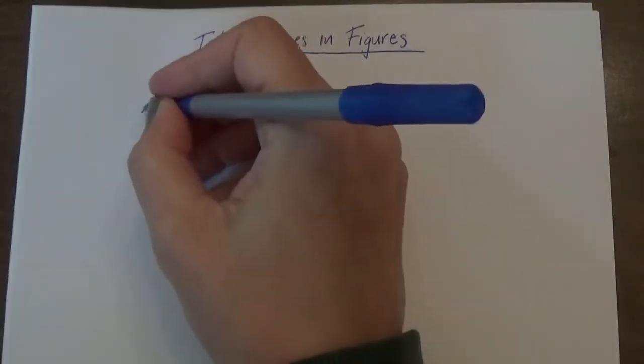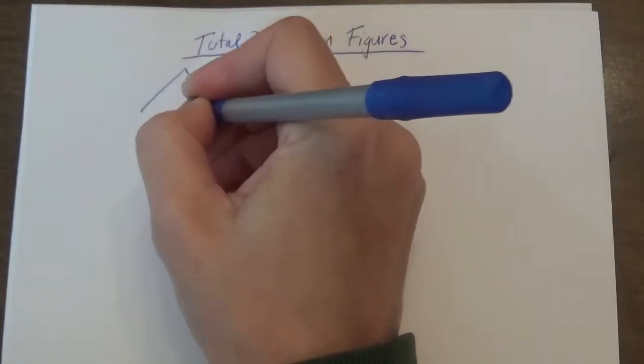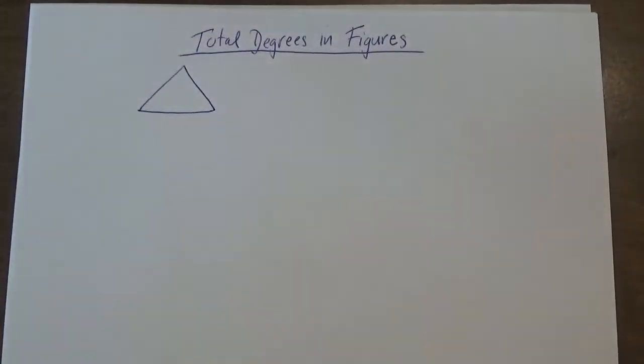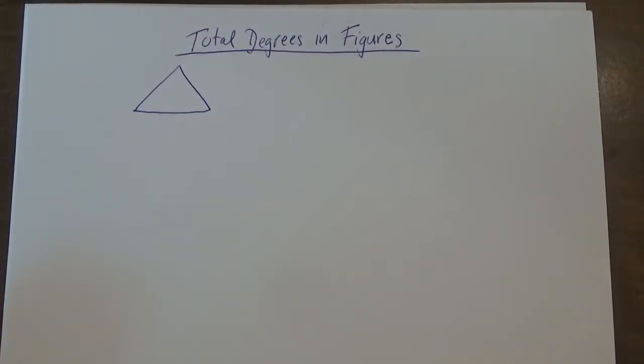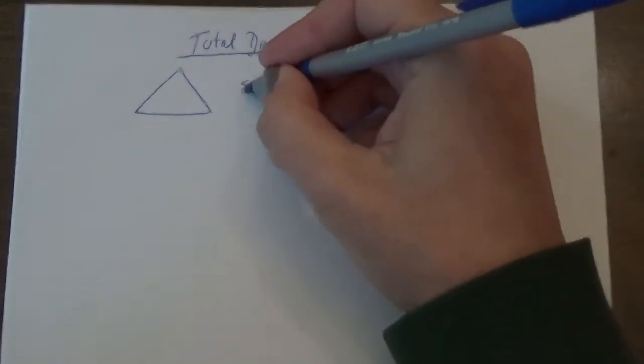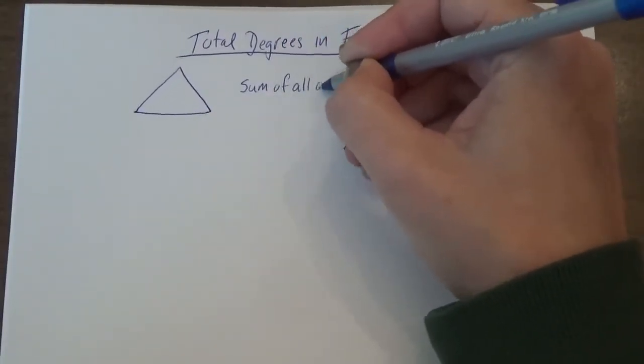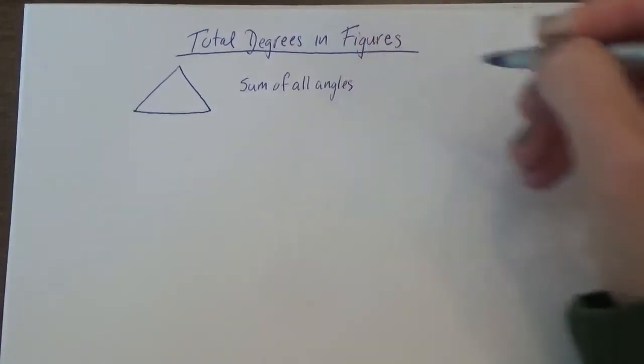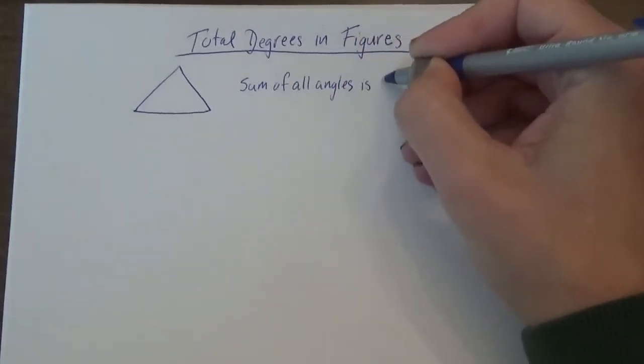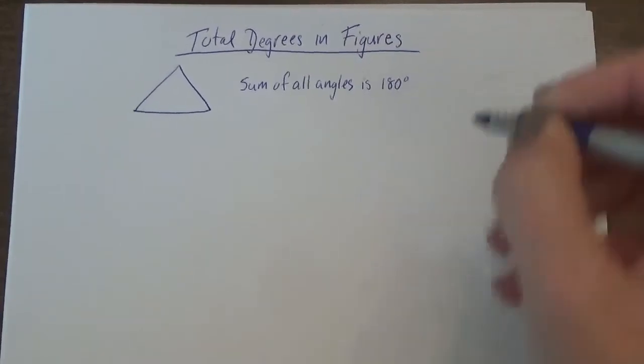The basic idea is if you have a triangle, and I don't know if we ever talked about this, but if you have any triangle, any shape whatsoever, the sum of all the angles in a triangle is always 180 degrees.